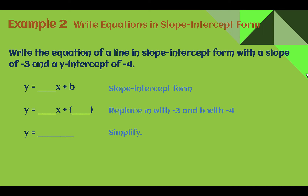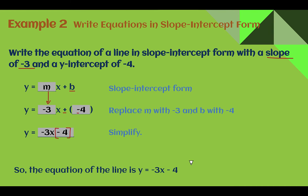Example 2: Write equations in slope-intercept form. Write the equation of a line in slope-intercept form with a slope of negative three and a y-intercept of negative four. Remember y equals mx plus b. Slope is m, so we put negative three in its place. The y-intercept is b, so we plug in negative four. Instead of having two symbols — adding a negative — that's the same as subtracting. Simplified: y equals negative three x minus four. The y-intercept there at the end is negative four.